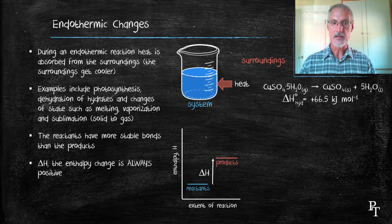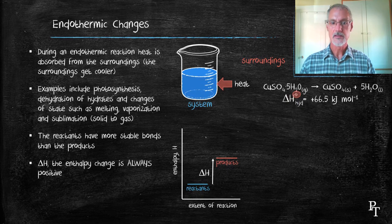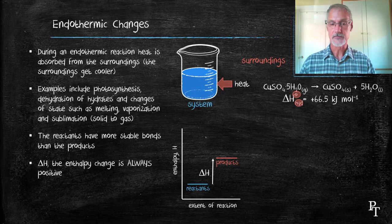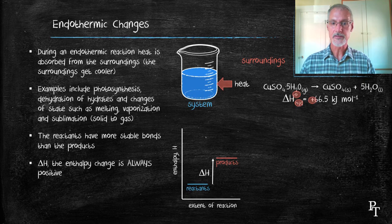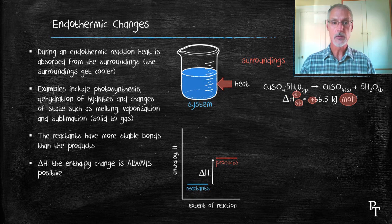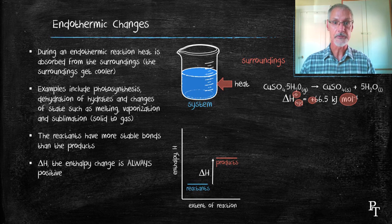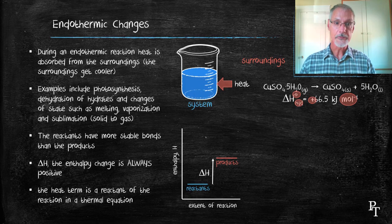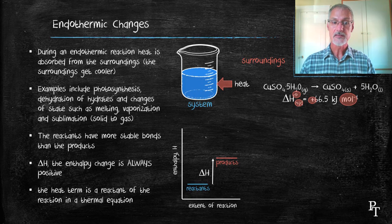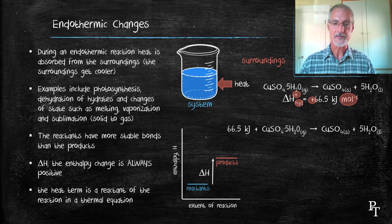Again, I indicate that this is measured at standard conditions. This is telling me my type of reaction. This is indicating that it's endothermic or heat is a requirement. And in this case, it's per mole of fuel or per mole of copper sulfate pentahydrate. We can also write this as a thermal equation. The difference being the heat term exists as a reactant.